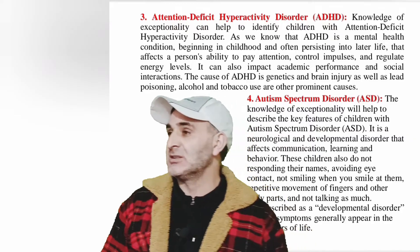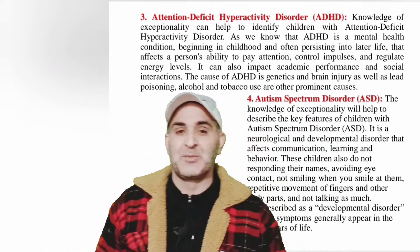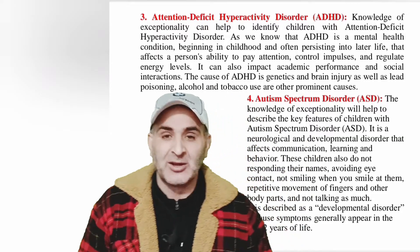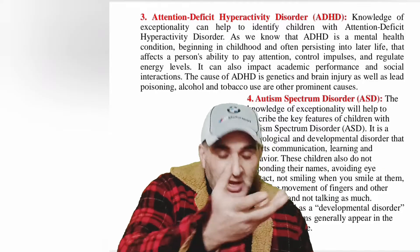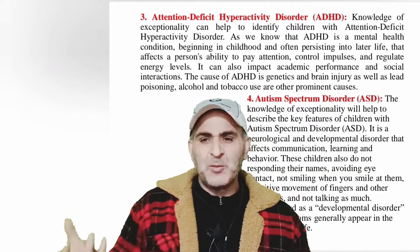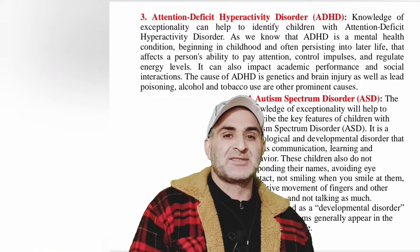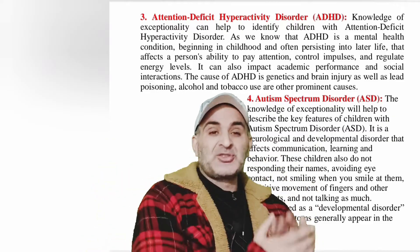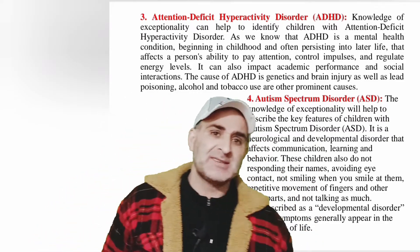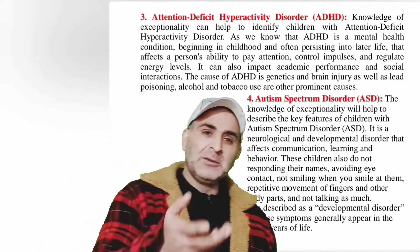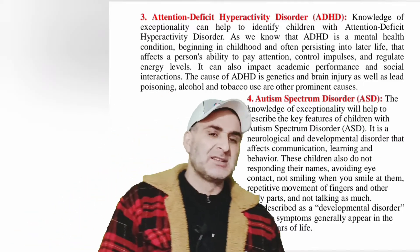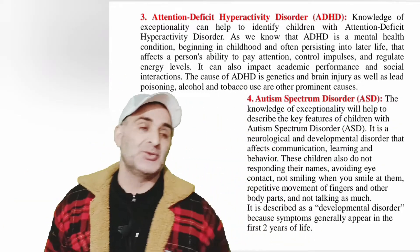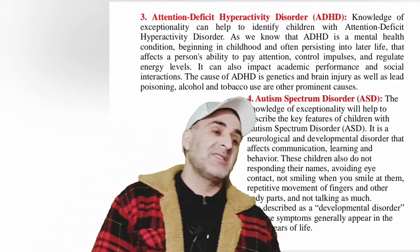Children with ASD cannot communicate well, and they face difficulty learning any skill. If you ask their name, they are not paying attention and they cannot respond. These children avoid eye contact and cannot maintain it. These children cannot smile back when you smile at them. A prominent problem is body shaking — they continuously and frequently move their bodily organs, particularly fingers. Knowledge of exceptionality helps to identify the children who have autism spectrum disorder.